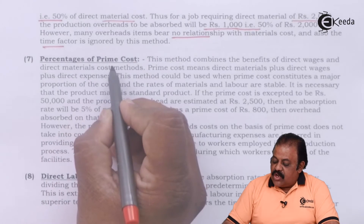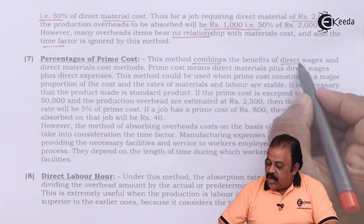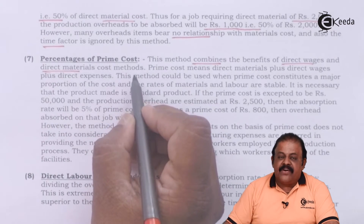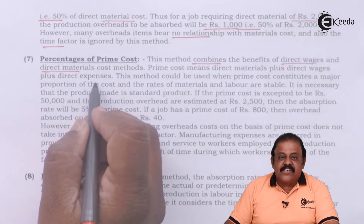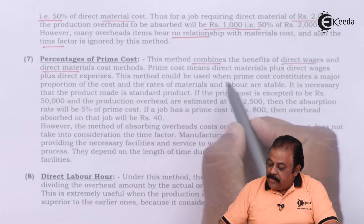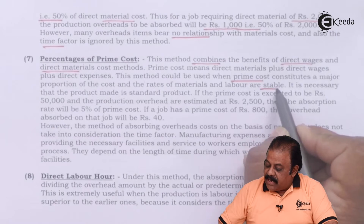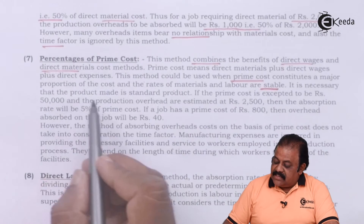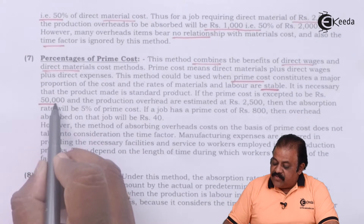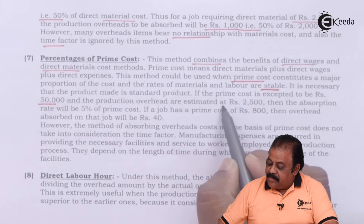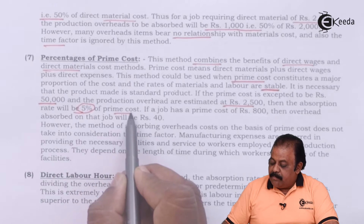Percentage of prime cost method: this method combines the benefits of the direct wages and direct material cost methods. Prime cost means direct material plus direct wages plus direct expenses. It is used when prime cost constitutes a major proportion of total cost and rates of material and labor are stable. It is also necessary that the product made is a standard product. If prime cost is expected to be Rs. 50,000 and production overhead is estimated at Rs. 2,500, the absorption rate will be 5% of prime cost.